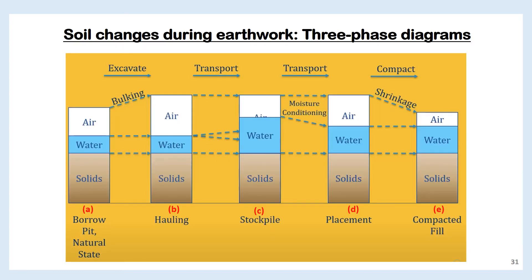We will use three-phase diagrams to illustrate how a soil changes during the earthwork process. In its natural state at the borrow pit, a given amount of soil will contain certain amounts of mineral solids, water, and air. When we excavate the soil in preparation for hauling, it will undergo some changes. The amount of solids and water won't change as we excavate the soil and place it in the dump truck, but its total volume will increase because the excavation process loosens the soil.